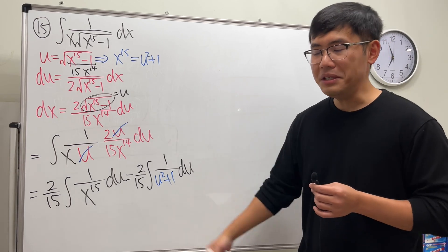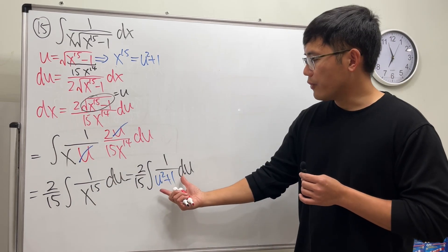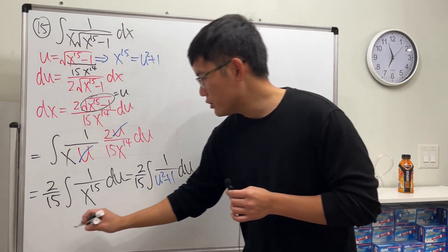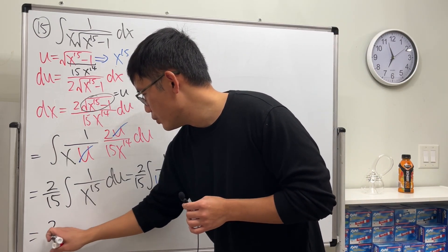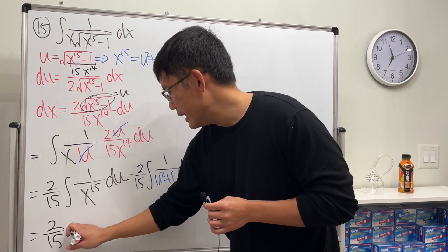Integrate this, not that. And the integral for this in the u world is inverse tangent of u. So ladies and gentlemen, we get 2 over 15 inverse tangent of u.